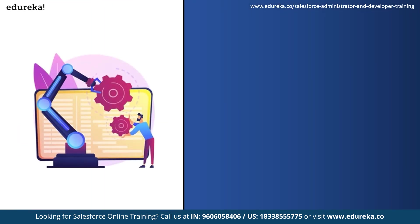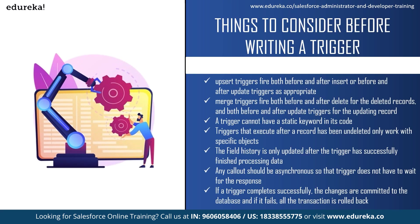The upsert trigger can fire both before and after insert or before and after update triggers as appropriate. The merge trigger can fire both before and after delete for deleted records, and both before and after update for updating records. A trigger cannot have a static keyword in its code. Triggers that execute after a record is undeleted only work for specific objects. Field history is only updated after the trigger has successfully finished processing. Any callout should be asynchronous so triggers do not have to wait for a response. If a trigger completes successfully, changes are committed to the database; if it fails, the entire transaction is rolled back.